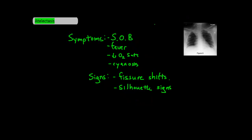A patient with atelectasis is obviously going to have some difficulty breathing. You might also have a fever, and depending on how severe the atelectasis is, the patient could have decreased oxygen saturation or even be cyanotic. The two signs that are really helpful for identifying atelectasis include shifts in the fissures of the lungs as well as silhouette signs. The fissures will shift toward the direction of the atelectasis, because as one lung is collapsing and getting smaller in volume, the other lobe will expand to fill that space.